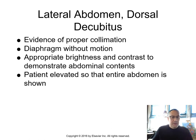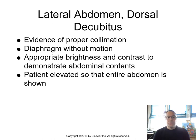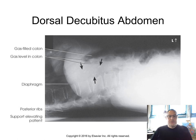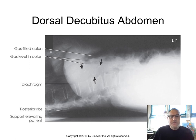The dorsal decubitus is on page 142 of Merrill's 14th edition, volume one. The patient is laying on their back with the central ray at the mid-coronal plane. For a hypersthenic patient, center slightly higher so you don't clip the anterior abdomen — that's where the free air will be. Check for proper collimation, diaphragm without motion, and appropriate brightness and contrast. On the sample radiograph, the anterior part of the abdomen is at the top and is not clipped.